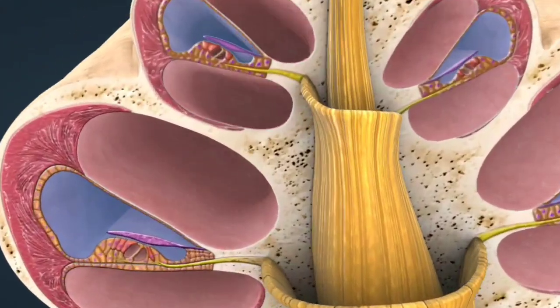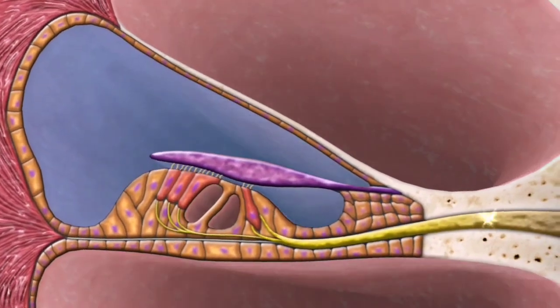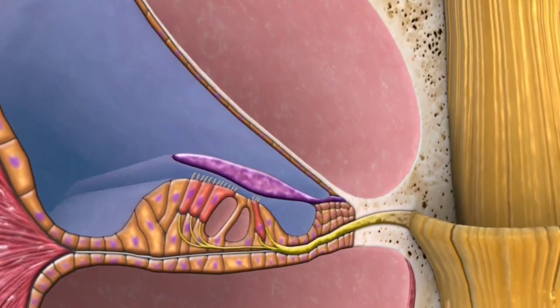Eustachian tube balances air pressure between the middle ear and the environment to maintain proper vibration.